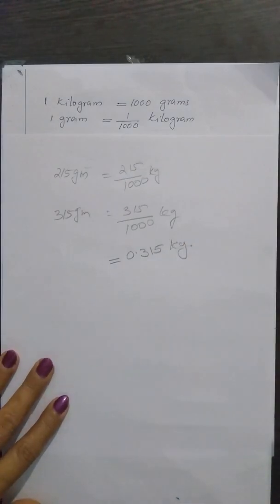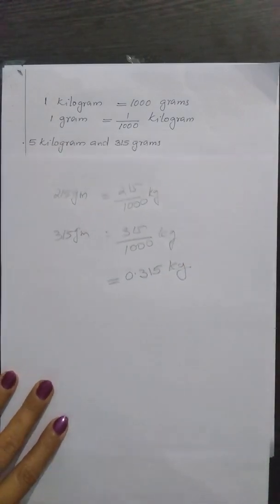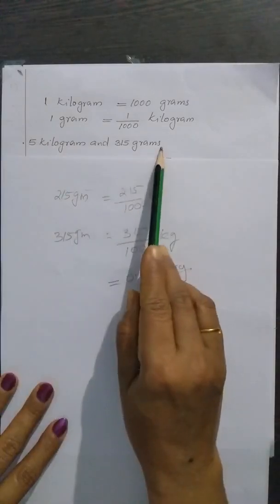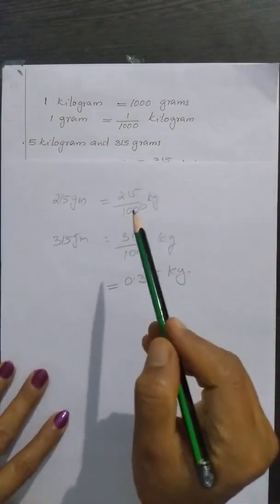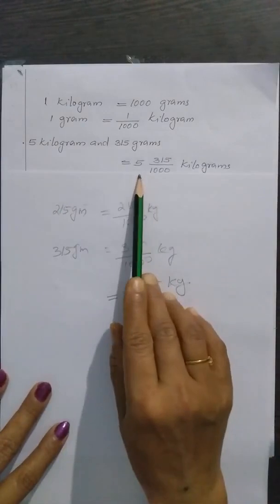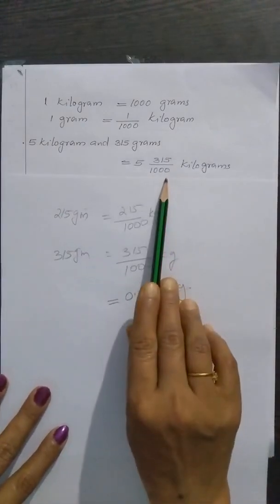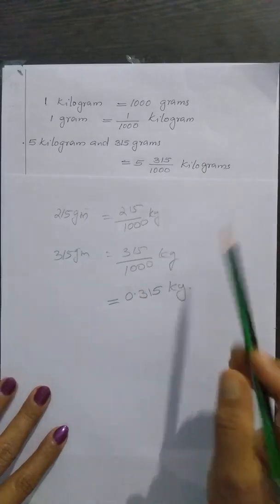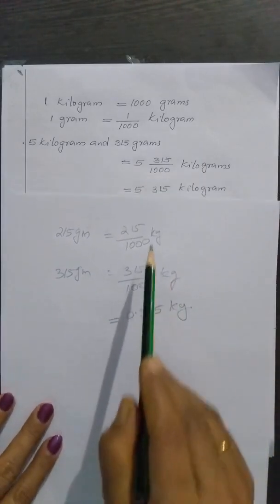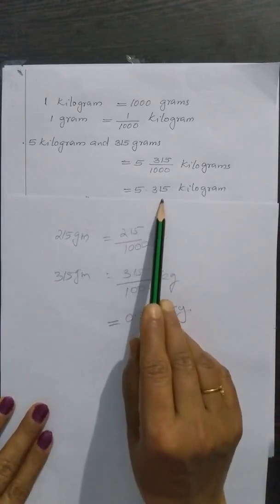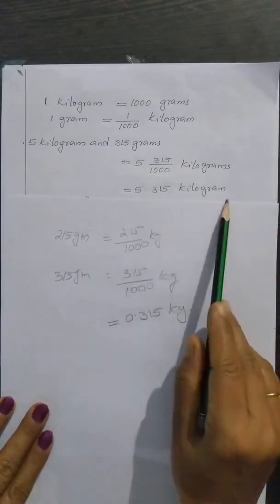So, 5 kilograms and 315 grams we can write it as 5 and 315 divided by 1000 kilogram, which is equal to 5.315 kilogram.